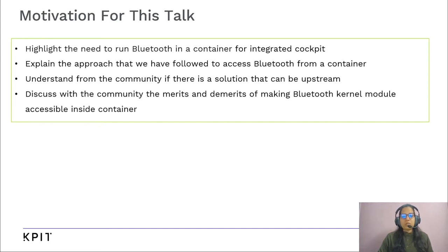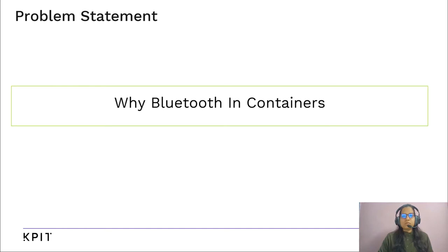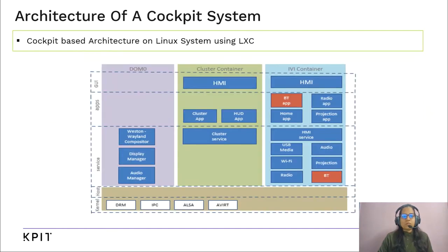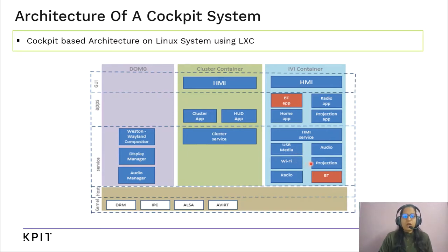Let us understand why Bluetooth in containers. This is a reference architecture of one of the Linux-based cockpit systems we are currently working on. There are three containers: DOM0, Cluster, and IVI. DOM0 is the minimal container that takes control of audio and graphics resources and maintains policy and permissions for resource access for the other containers. Cluster and IVI run as separate containers, and all IVI functions like USB media, WiFi, projection, audio, radio, and BT are running in the IVI container.